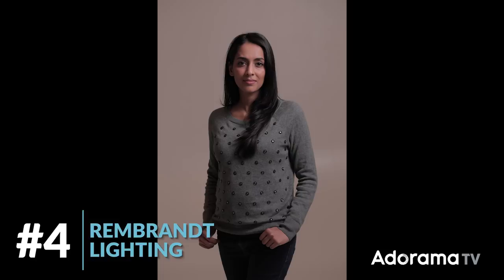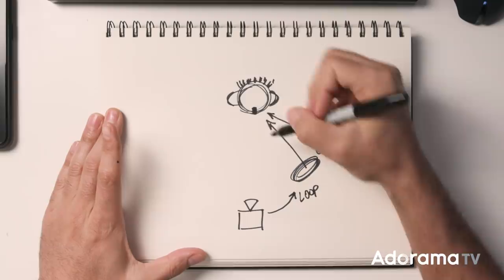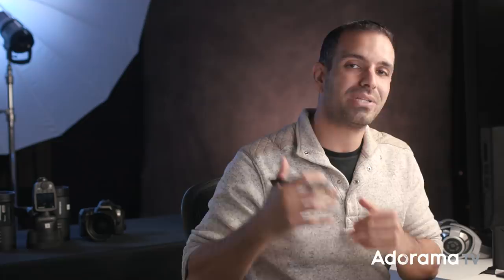Next, let's talk about Rembrandt lighting. Shifted a bit further than loop, it casts a small triangle highlight on the shadow side of the face while lighting the entire opposite side. This visually interesting key light pattern was named after the painter Rembrandt, who often used it in his portraits. It remains one of the most popular lighting patterns for photographers — it's very visually compelling, and you can control the drama with fill light and the depth of the shadows.